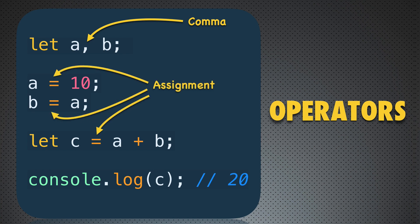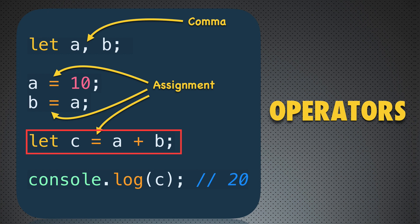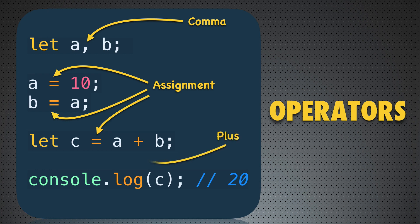Next, you see the assignment operator, which we have used a lot in this course. It is used when you want to assign a value to a variable. Here we assign value 10 to variable a, then we assign the value of variable a to variable b. Next we define a new variable c and use the assignment operator to assign the sum of a and b to it — also using the plus operator. When we log variable c to the console, we get 20.